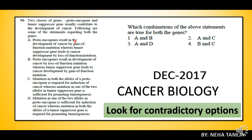If we talk about Proto-oncogenes and gain of function mutation, that is a very correct statement. But still, look at the contradictory options. You can see C and D are also contradictory, but we don't have just one option among C and D. So we have to choose. Looking at all the points, Proto-oncogenes and gain of function mutation is very correct, so we will add that combination. This combination approach is again important for finding the correct option.